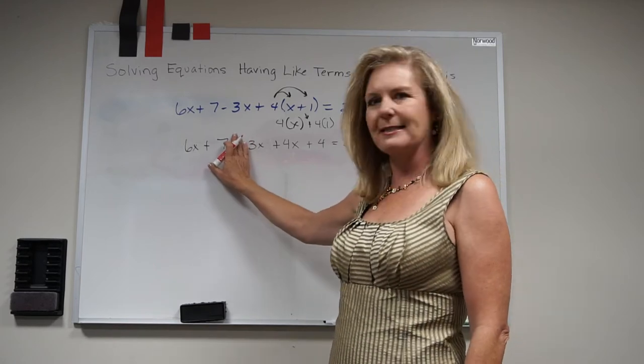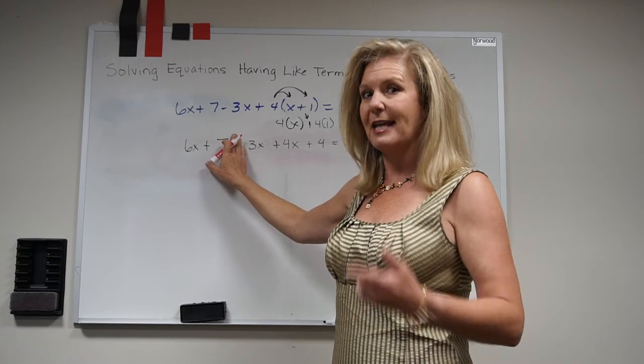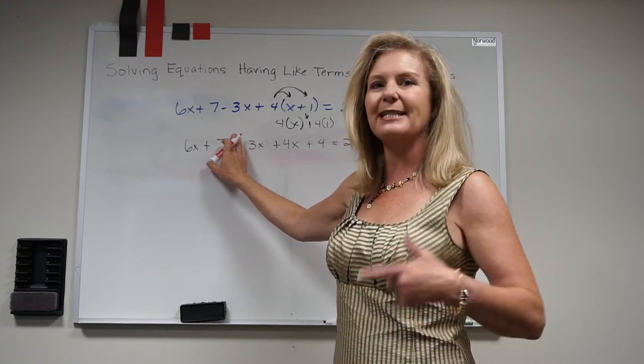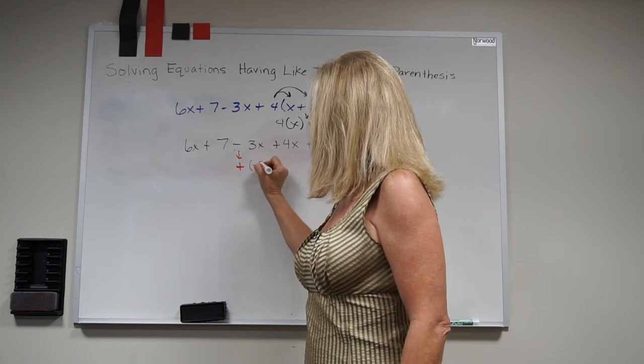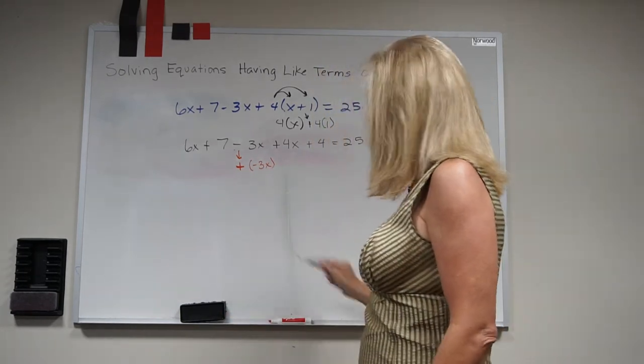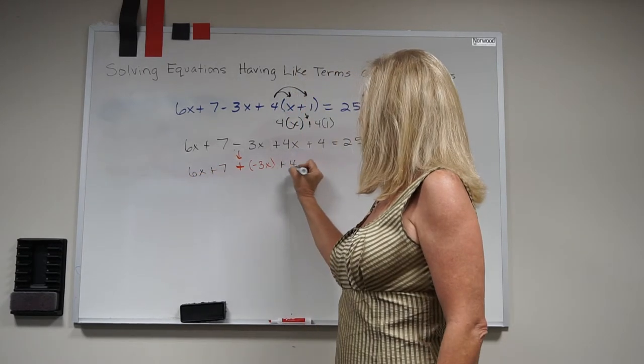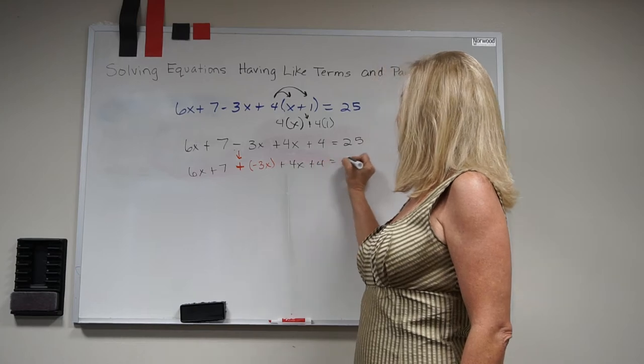So I'm going to cover up that subtraction and I see that was a positive 3x. I'm going to then take it to its opposite which is a negative 3x. Now nothing else changes in the entire equation so I'm just going to go back and rewrite exactly the rest of the equation.